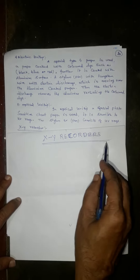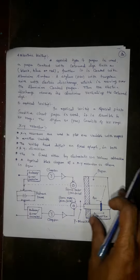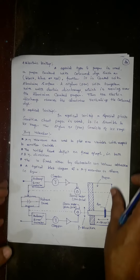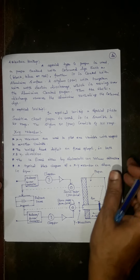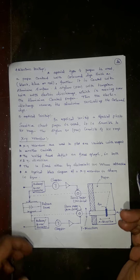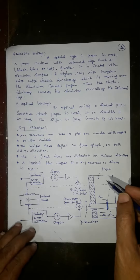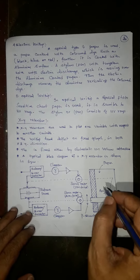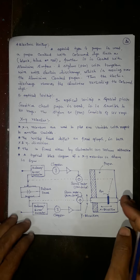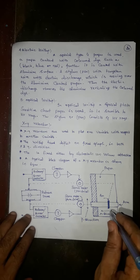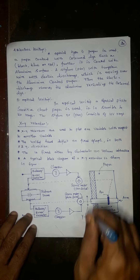The topic is XY recorders. XY recorders are different from strip chart recorders. In a strip chart recorder, the paper is moving and the stylus is also moving. But in the case of an XY recorder, the paper is fixed and the pen will move in both the X direction and the Y direction.